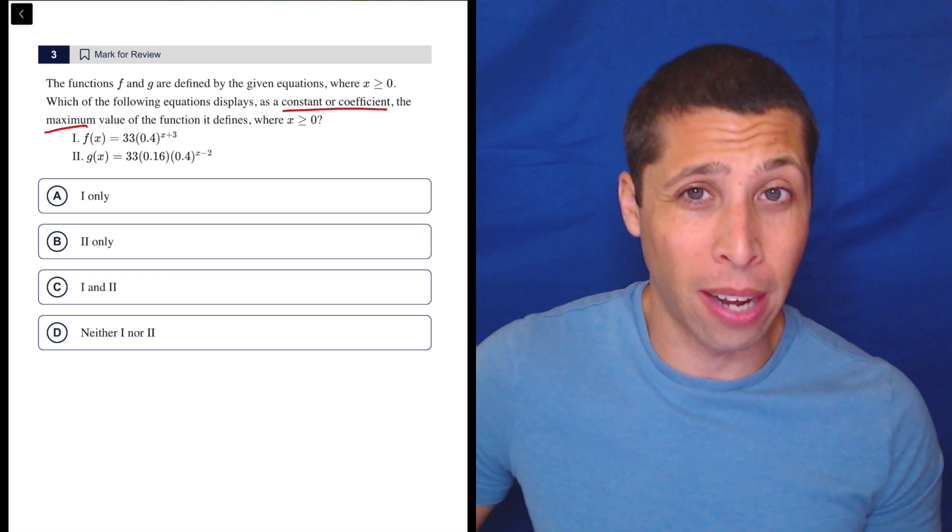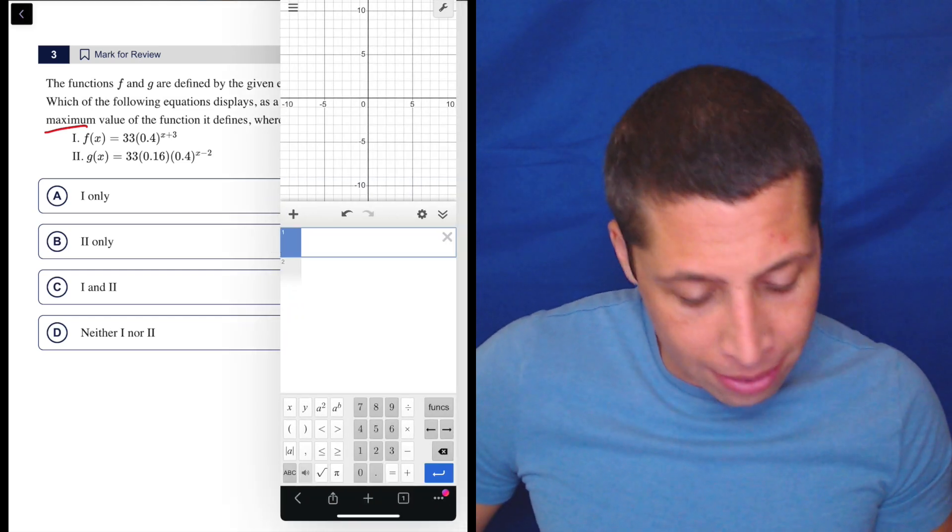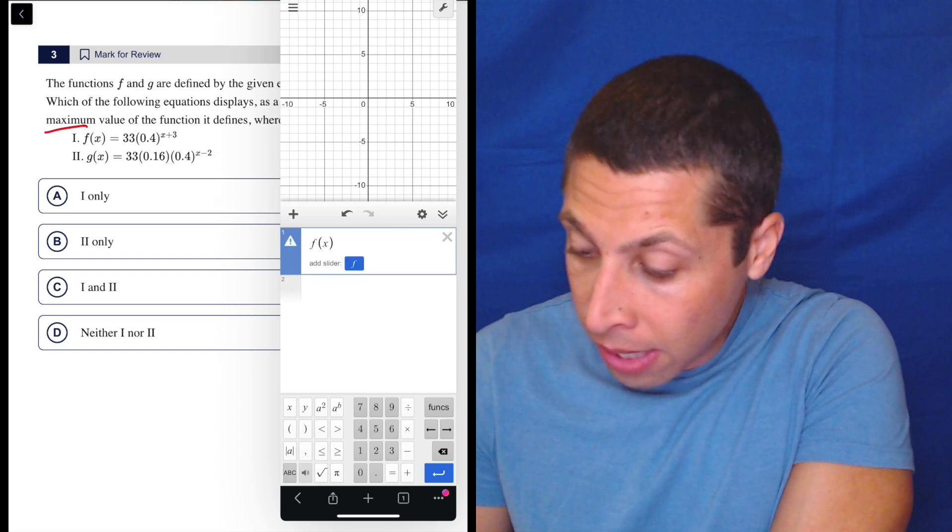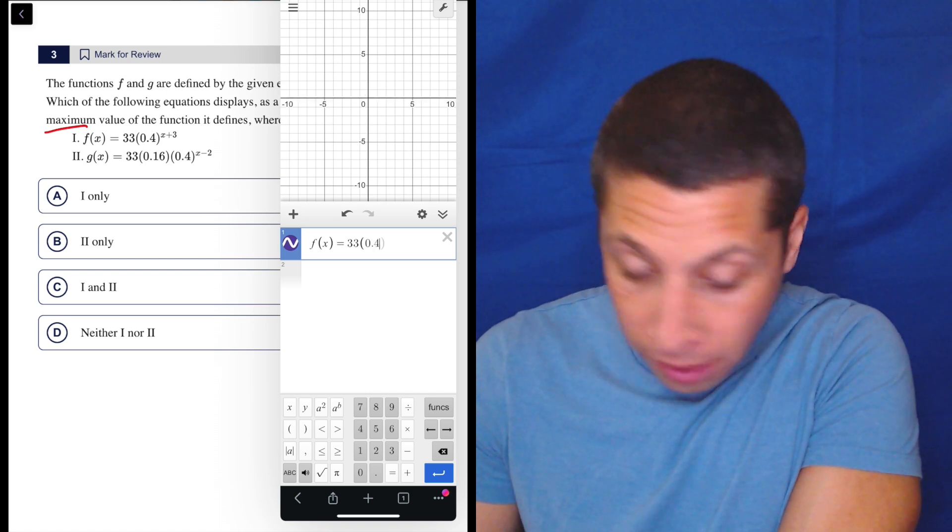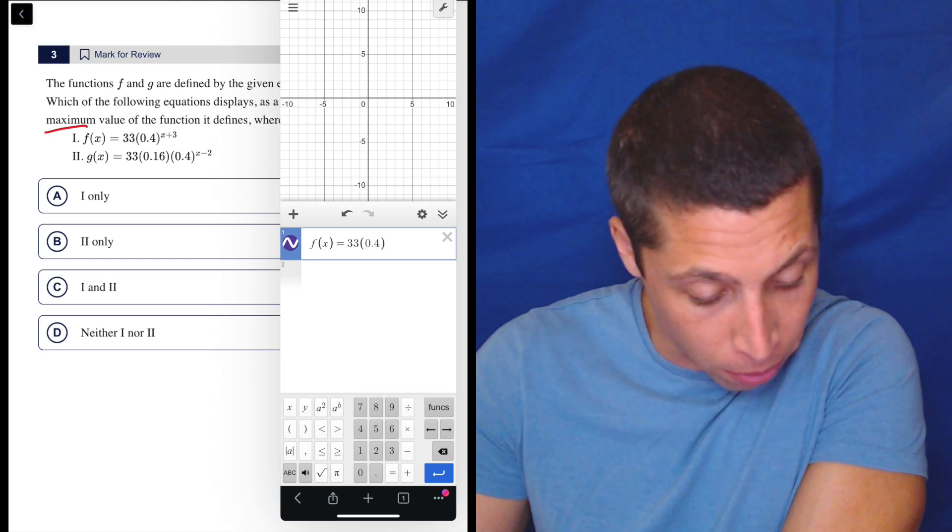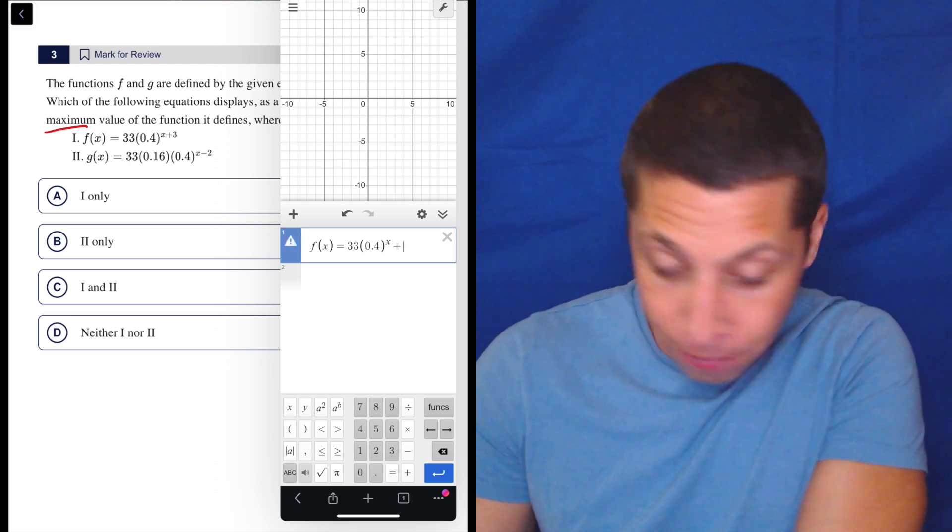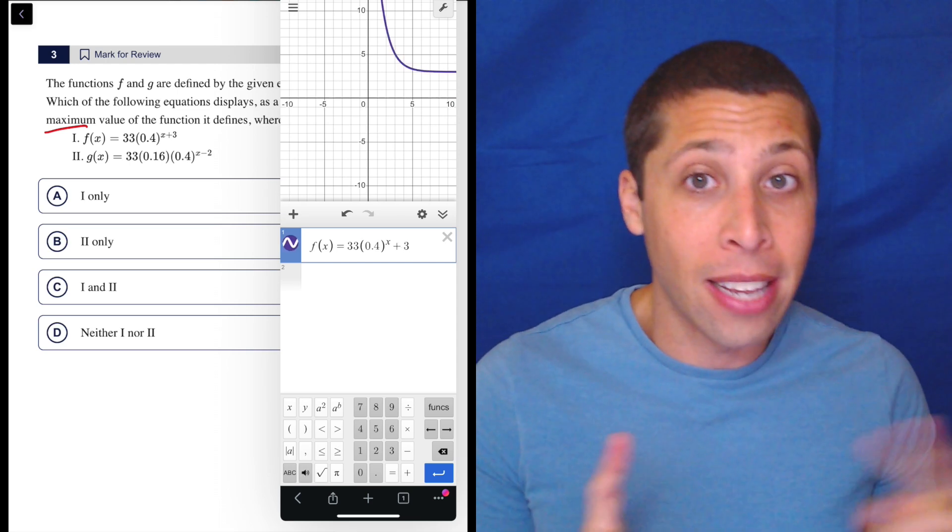But this is a great example of like I could also see how it looks in Desmos. The only thing is Desmos is kind of a pain here, but I think it's fine. So f of x, let's type it up, is equal to 33 times 0.4 and then watch what happens. If I just do the exponent and do x plus 3,